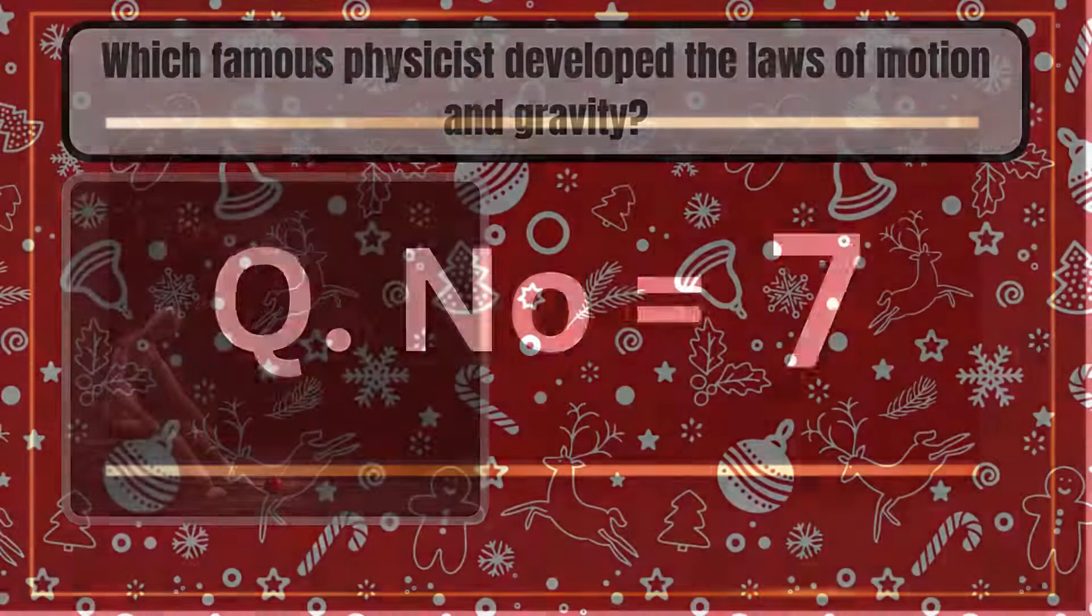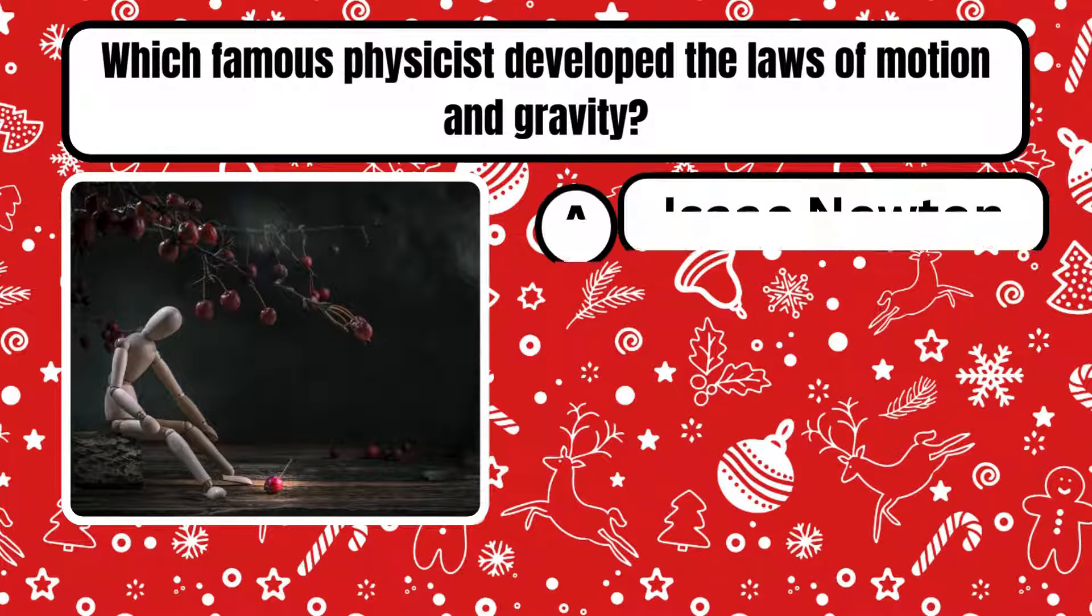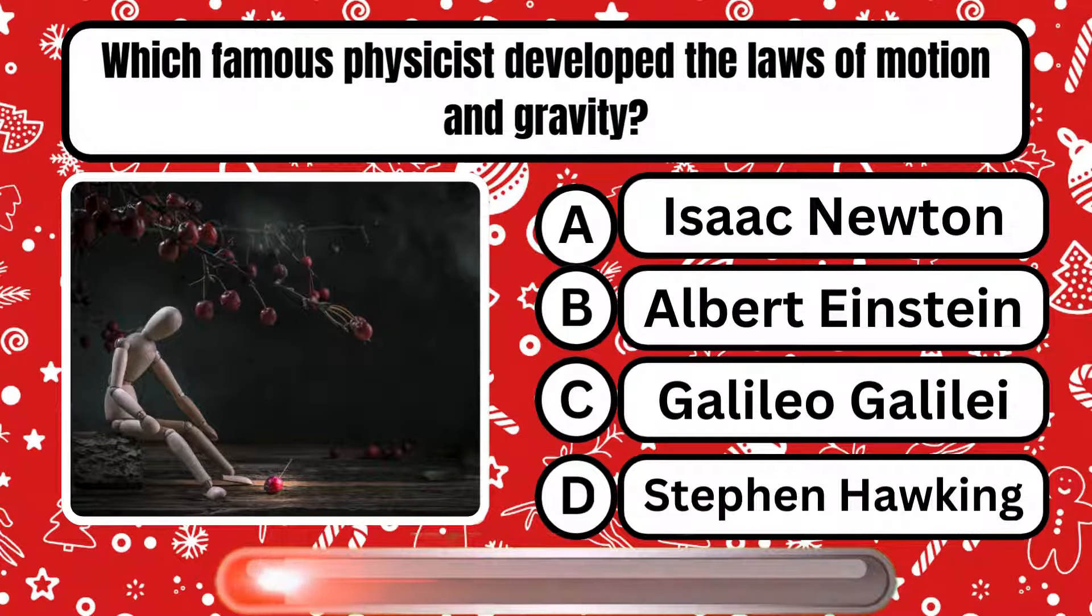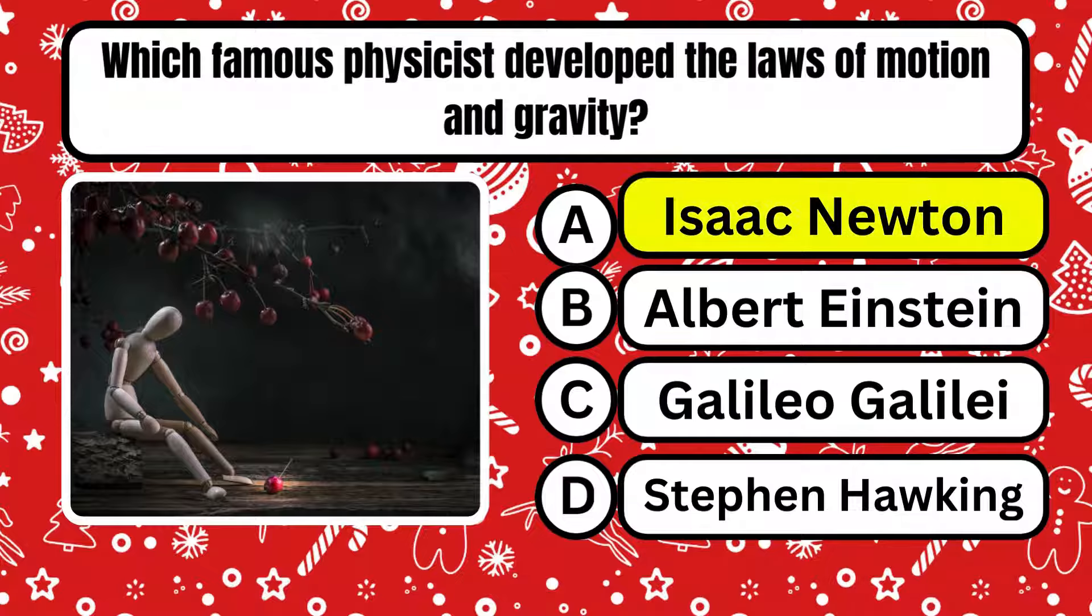Question number 7. Which famous physicist developed the laws of motion and gravity? Right answer is option A, Isaac Newton.